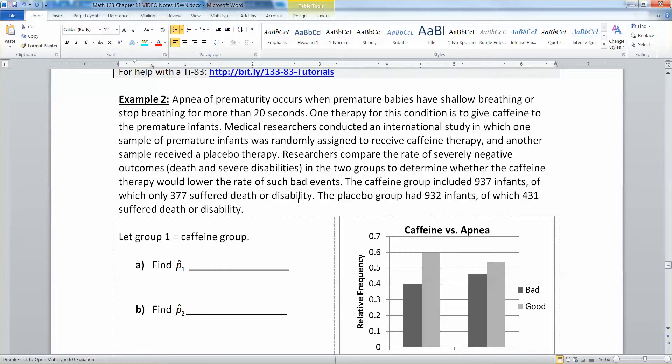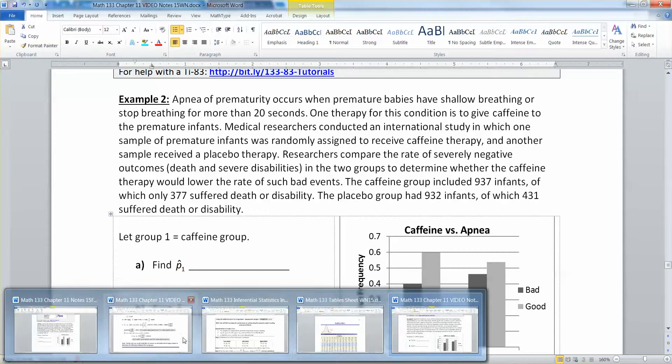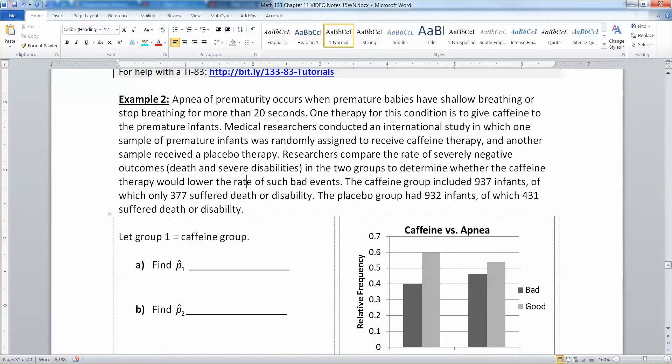Apnea of prematurity occurs when premature babies have shallow breathing or stop breathing for more than 20 seconds. One therapy for this condition is to give caffeine to the premature infants. Medical researchers conducted an international study in which one sample of premature infants was randomly assigned to receive caffeine therapy and another sample received placebo therapy. Researchers compared the rate of severely negative outcomes, death and severe disabilities, in the two groups and determined whether the caffeine therapy would lower the rate of such bad events. The caffeine group included 937 infants of which 377 suffered death or disability. The placebo group had 932 infants of which 431 suffered death or disability.